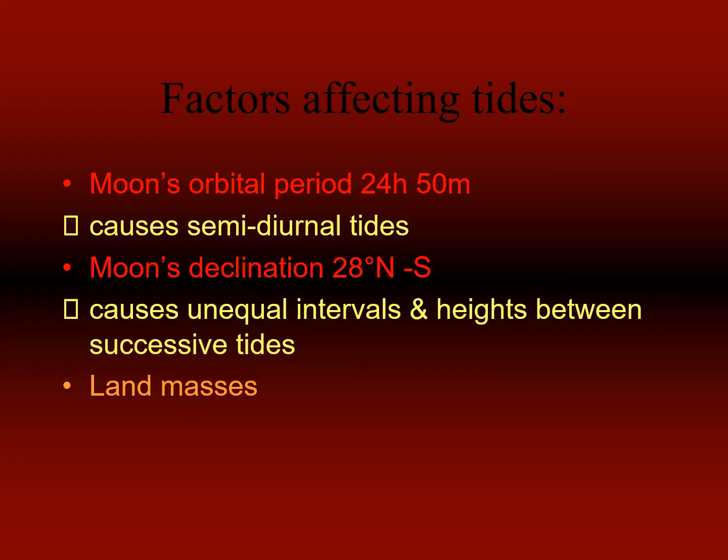Apart from the moon's effects, other factors such as land masses, the shape of the sea floor, wind, and barometric pressure also affect the height of tides. Tides vary on time scales ranging from hours to years due to a number of these factors.